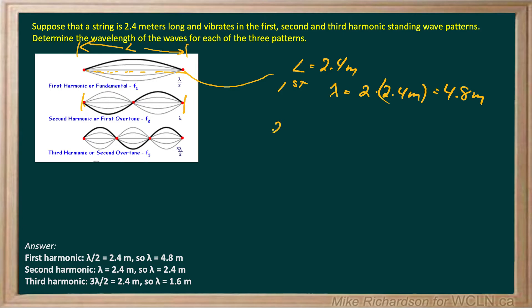So there in our second harmonic, the wavelength is the length. So our wavelength is 2.4 meters.